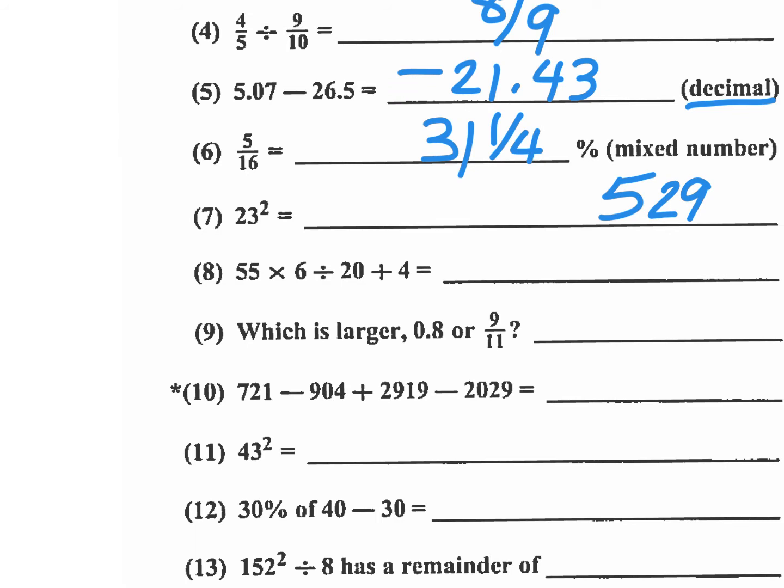For number 8, 55 times 6 divided by 20 and then add 4. So when I divide by 20, I could break it into factors. I could divide this by 2 and this by 10. So I'm dividing by 20 when I divide by factors of 2 and 10. So 55 divided by 10 is 5.5 times 3 would be 16.5. So I have 16.5 plus the 4, that would be 20.5. So I just write 20.5.